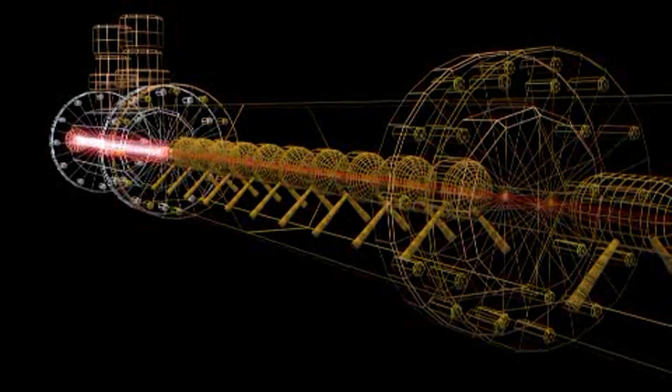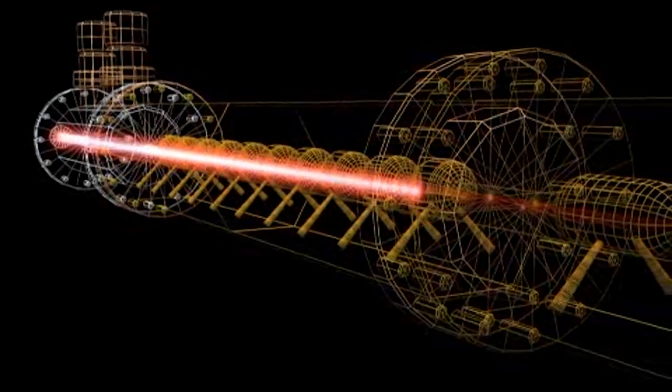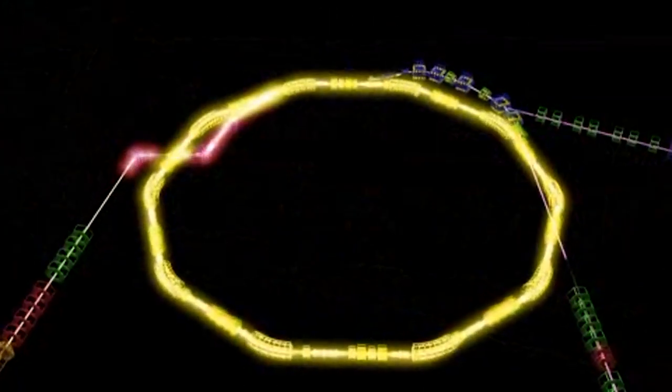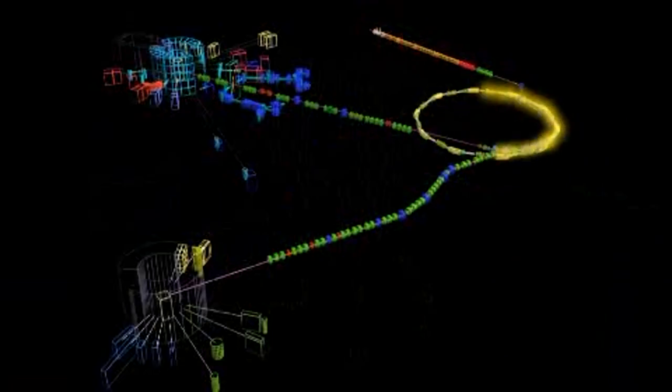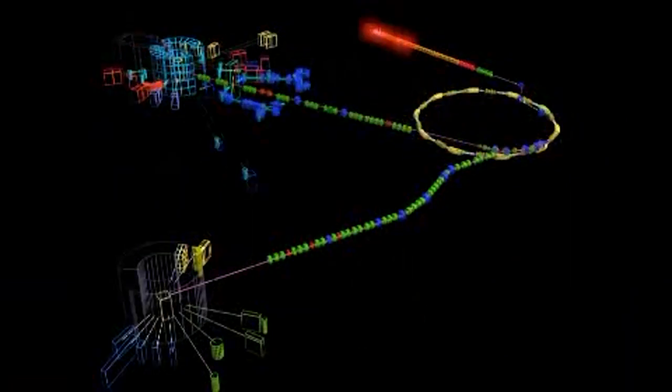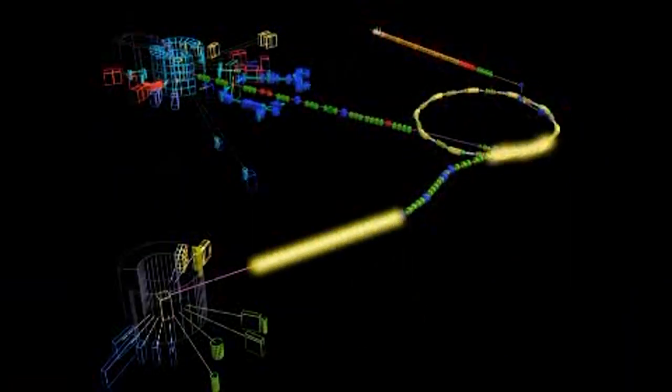We have a linear accelerator up to 34% of the speed of light, which then injects into a synchrotron, a ring. That ring accelerates the beam further up to 84% of the speed of light, much closer to the speed of light.